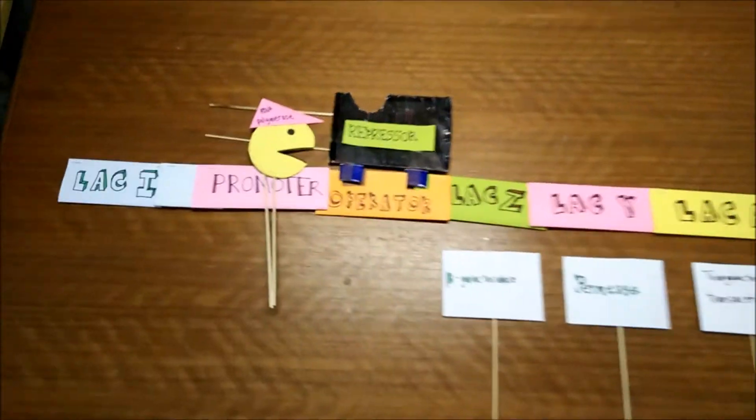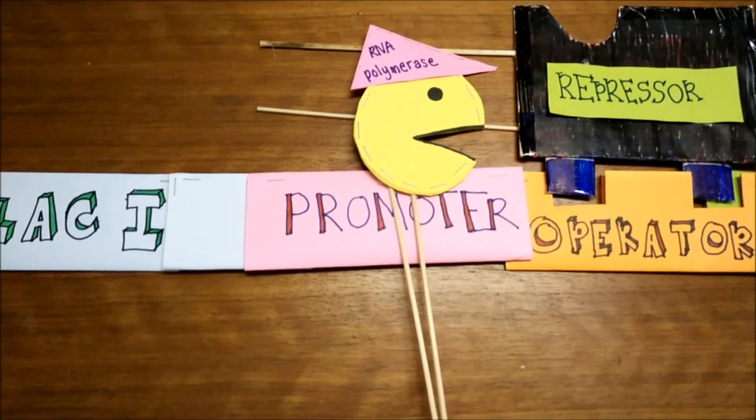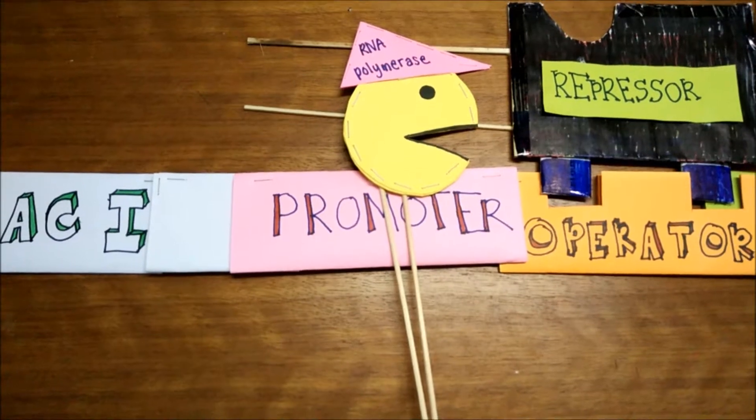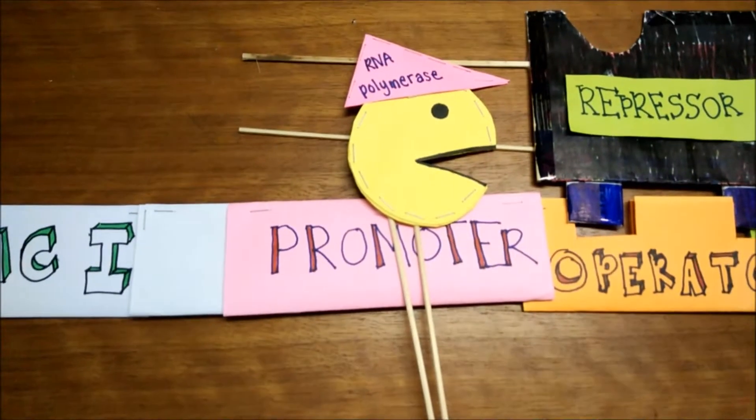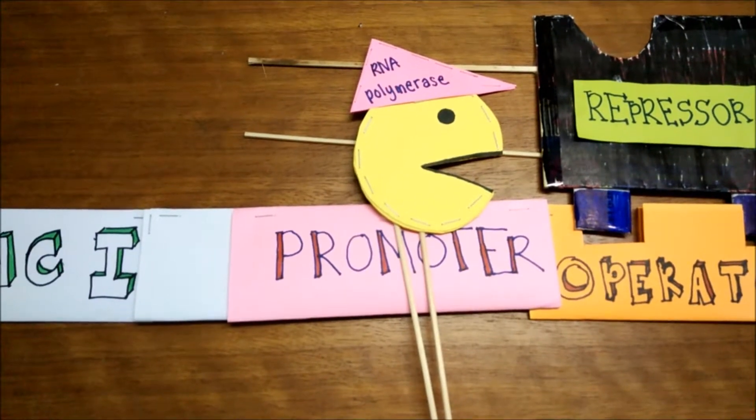First, the Promoter. Promoter is the binding site for RNA polymerase. RNA polymerase functions to transcribe the structural genes to produce mRNA.